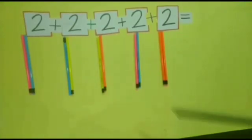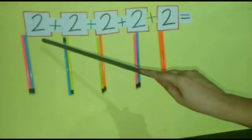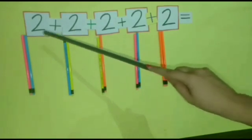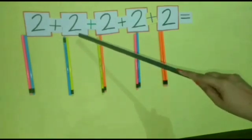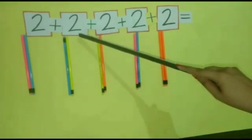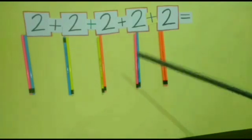Now they saw pencils in the fair and thought of buying them, as these will be useful in school. Five children bought two pencils each. The first child got two pencils. The second child got two. So, two plus two — four. The third child also got two pencils. So, four plus two — six.